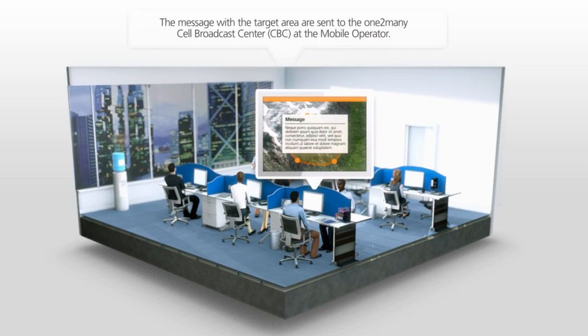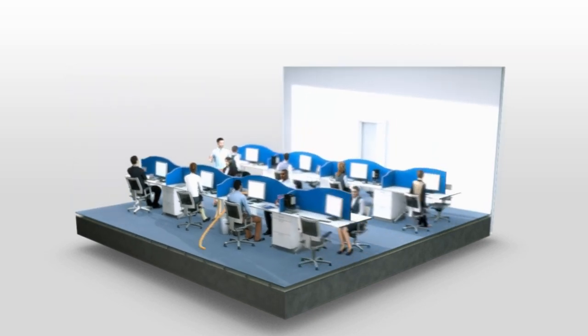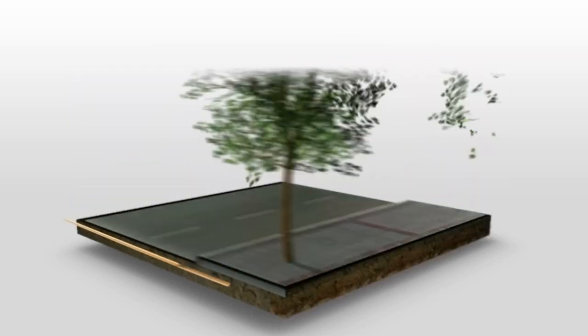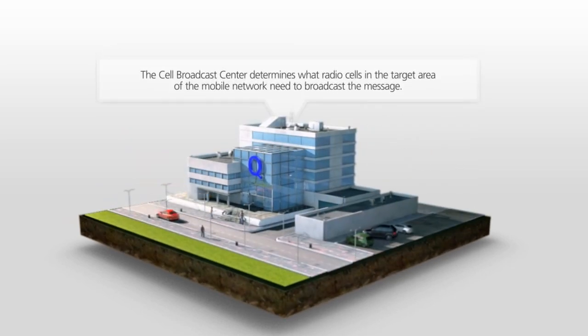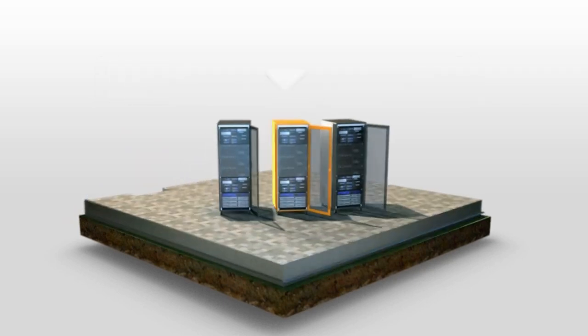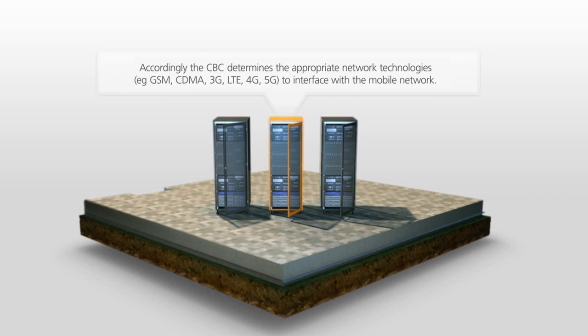The message, along with the target area, is sent to a cell broadcast centre, or CBC, at the mobile operator. The cell broadcast centre determines which radio cells in the target area of the mobile network need to broadcast the message. Accordingly, the CBC determines the appropriate network technologies to interface with the mobile network.